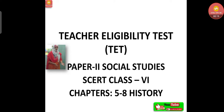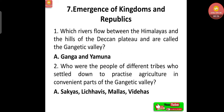In the previous class we discussed the fifth and sixth chapters. Today we are going to do the seventh and eighth chapters of history. The seventh chapter is the Emergence of Kingdoms and Republics. Which rivers flow between the Himalayas and the hills of the Deccan Plateau and are called the Gangetic Valley?